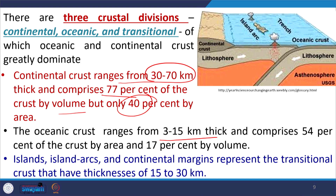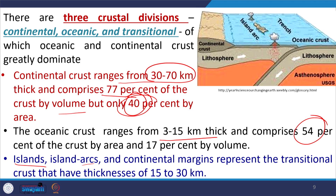So about 55 percent is oceanic and about 40 percent is continental, with the remaining being transitional crust — representing islands, island arcs, and continental margins. Only the uppermost part of the crust is available for direct study; at greater depth all information about composition and structure is indirect. We have seismics, magnetics, gravity, GPR, and well logging — all these are indirect evidences used to study deep crustal composition.